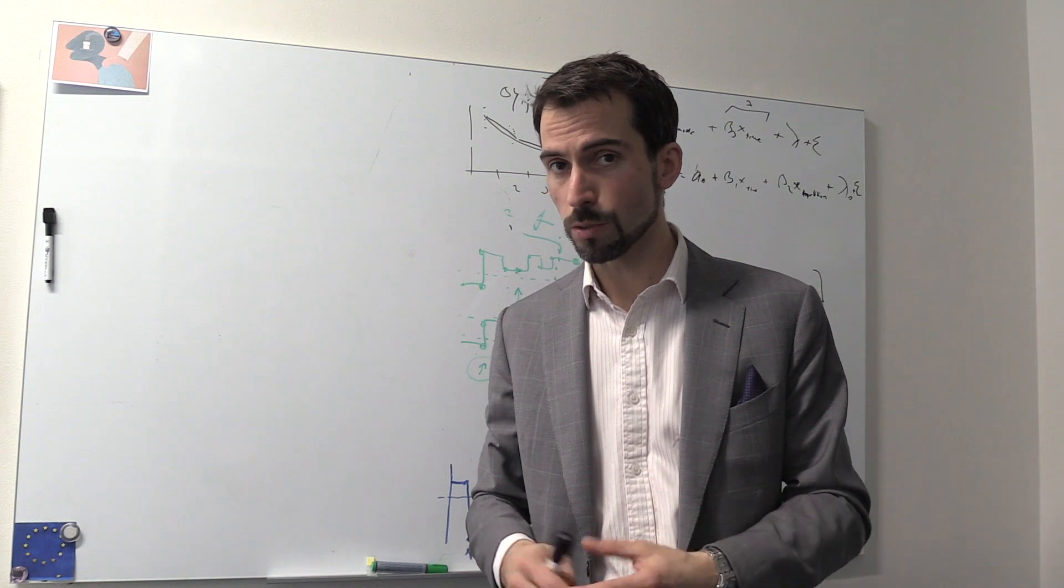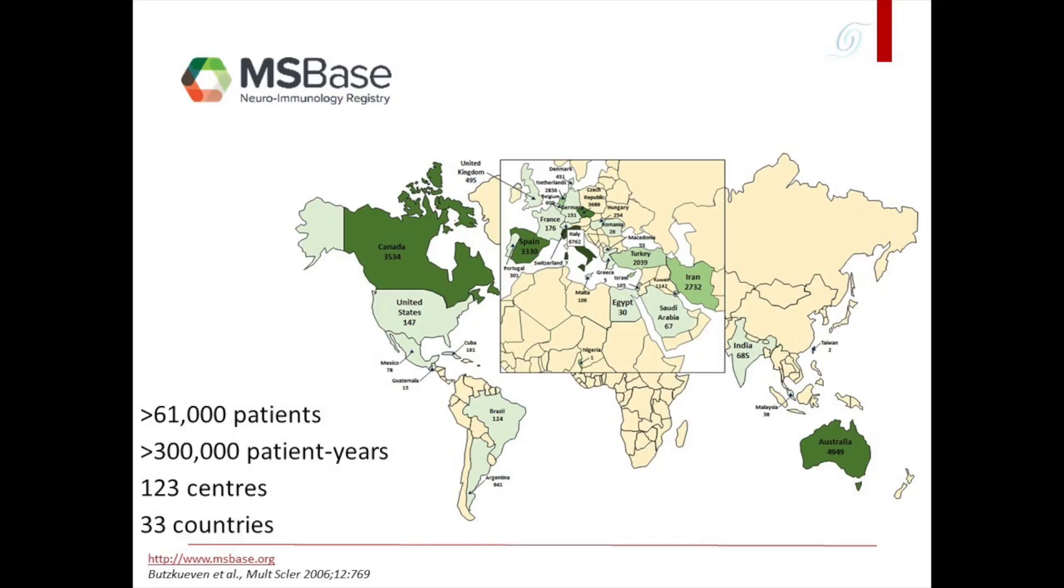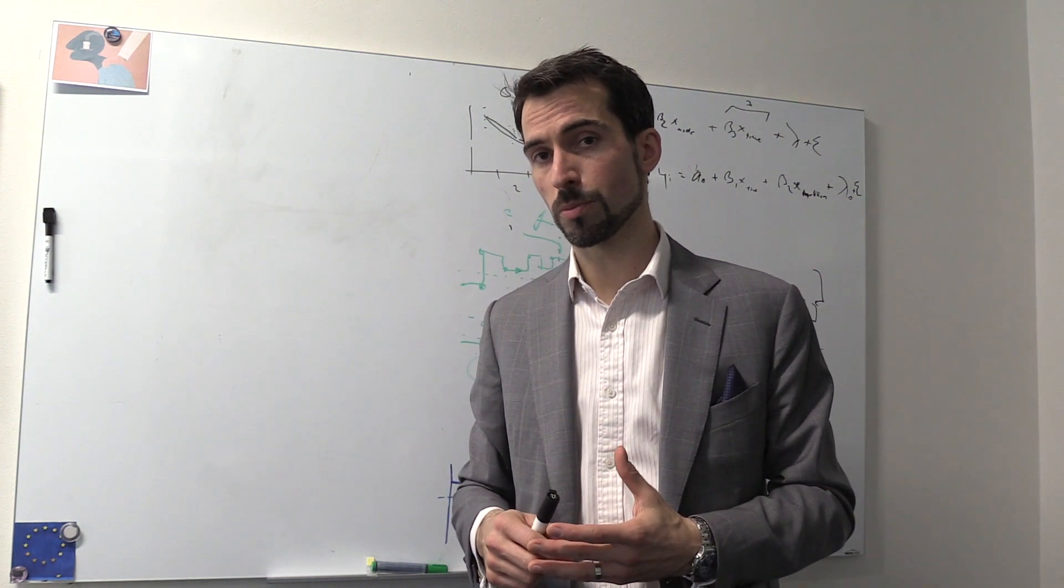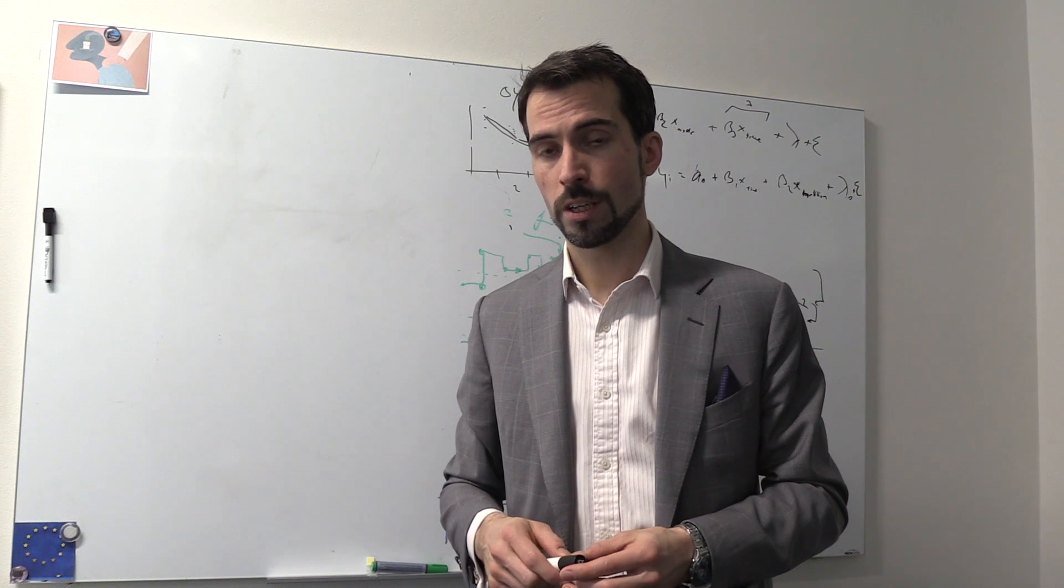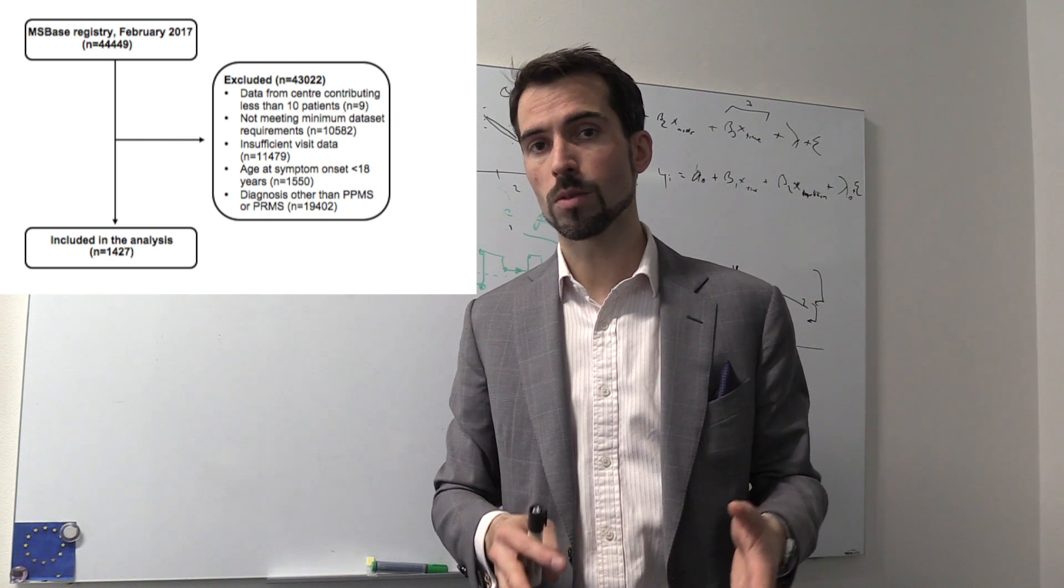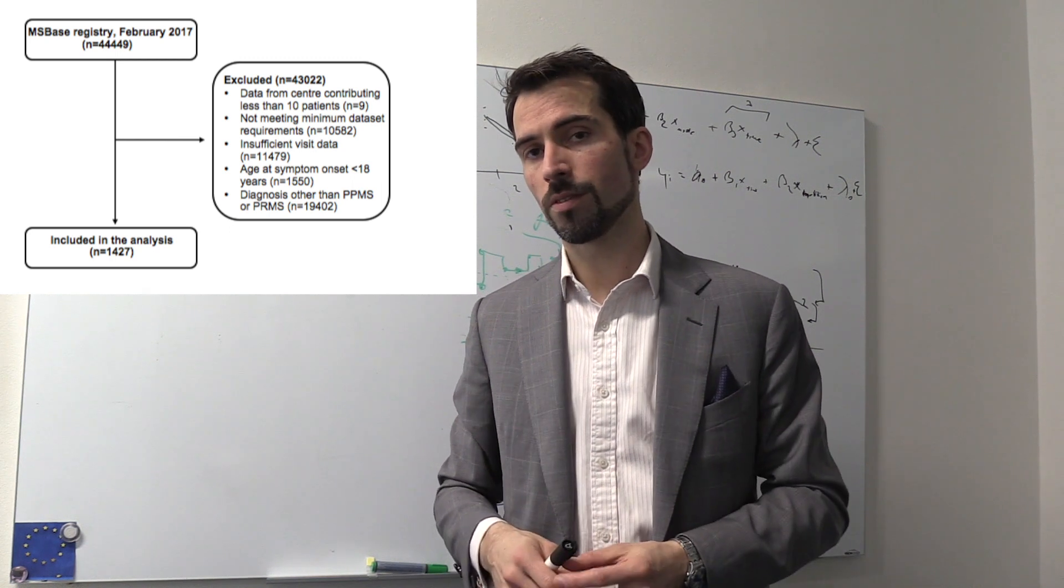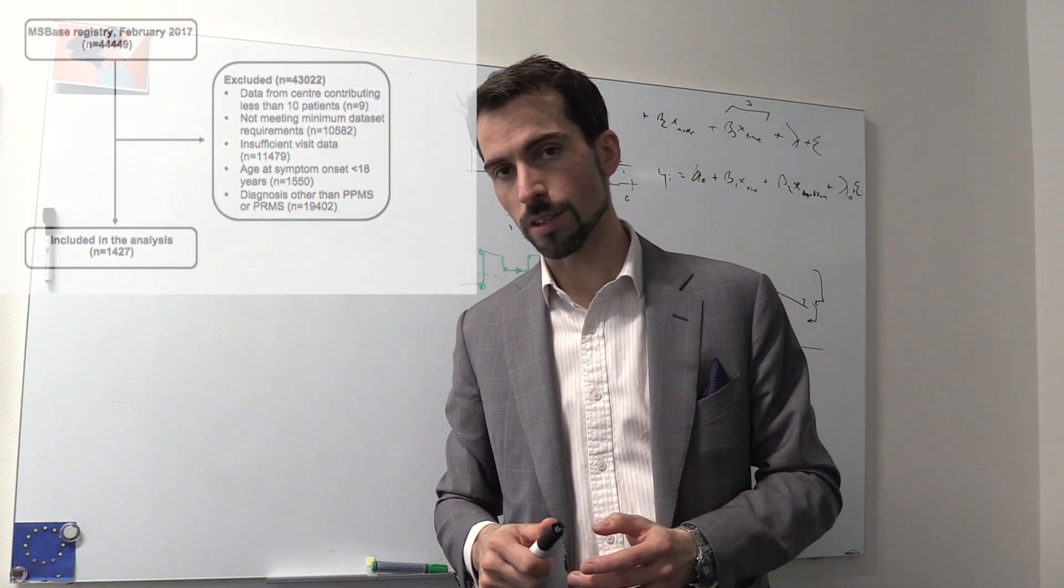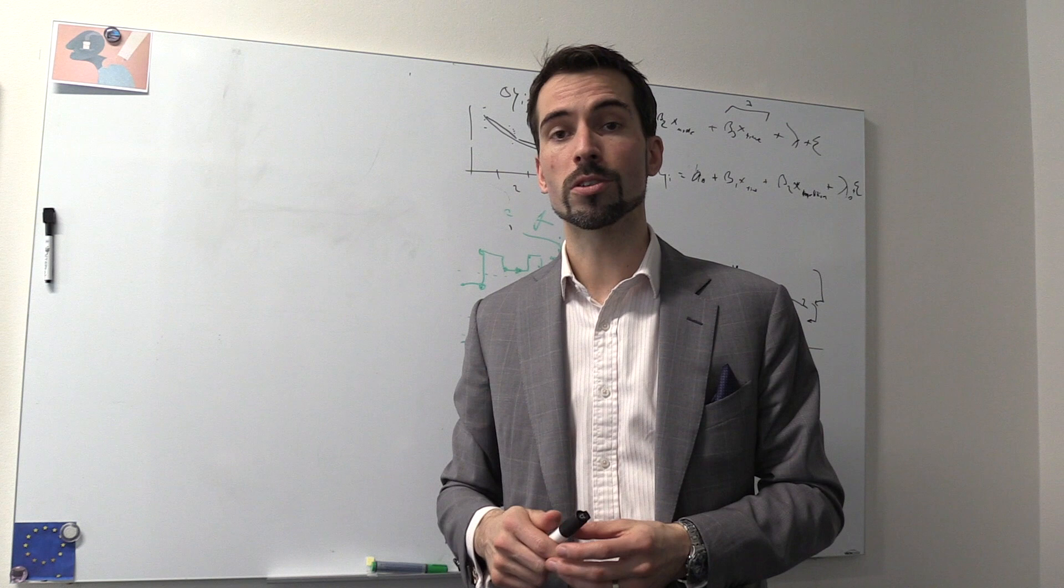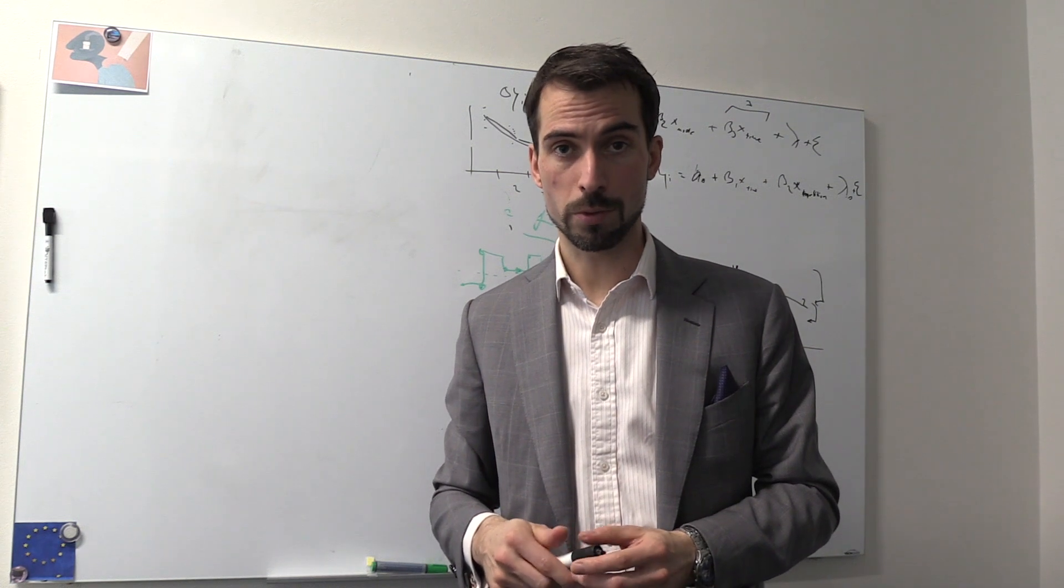However, what we observed was quite surprising. Jordana has used MSBase, which is a large international data set from people with multiple sclerosis from multiple countries, to identify patients with primary progressive multiple sclerosis. She found 866 people with primary progressive MS without relapses and 553 patients with primary progressive MS who had also relapses in addition to their primary progressive disease course.